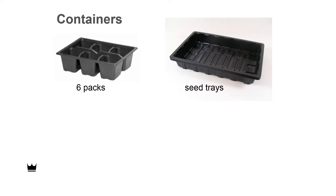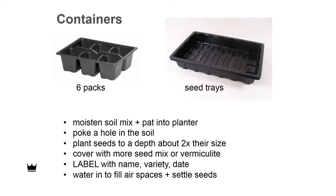Containers can be reused many times, but it's a good idea to put them through a 10% bleach solution to kill any disease-causing organisms or fungal spores. We want to moisten our soil mix, put it into the planter, and then poke a hole in the soil. We're going to plant seeds to a depth about twice their size. Then we cover with just a little bit more seed mix or vermiculite, and label with the name, variety, and date. We want to water to fill in air spaces and help settle the seeds.